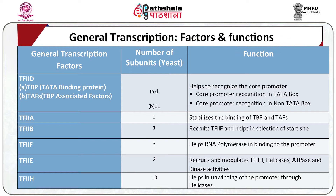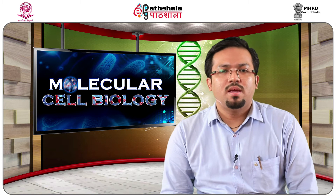TF2A stabilizes the binding of TBP and TAFs. TF2B recruits TF2F and helps in selection of the start site. TF2F helps RNA polymerase in binding to the promoter. TF2E recruits and modulates the TF2H helicase, ATPase, and kinase activities. TF2H helps in unwinding of the promoter through its helicase activity.